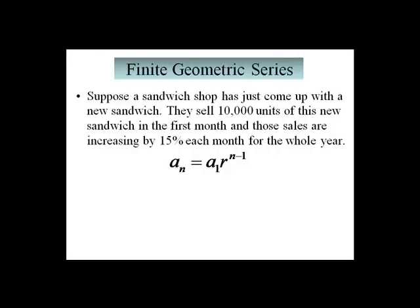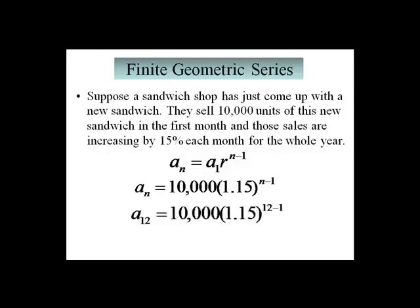For our problem, our first term is 10,000, and if you remember our study of exponential functions, since we have a 15% increase, our common ratio is actually going to be 1.15. This will calculate the general term giving us the number of sandwiches in any given month. We want to do this for the last month of the year, so we're doing it when n equals 12. In that last month, we get 46,524 sandwiches.